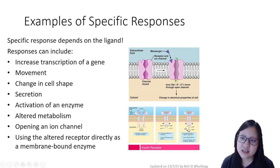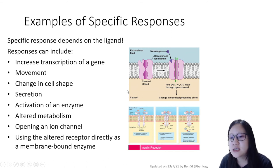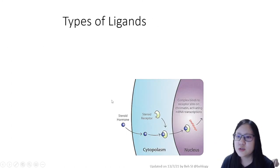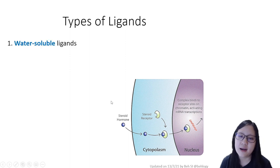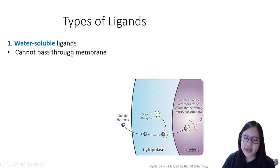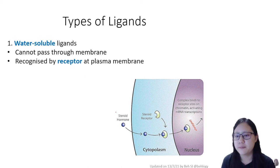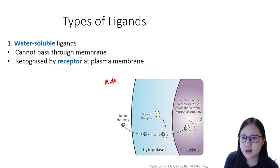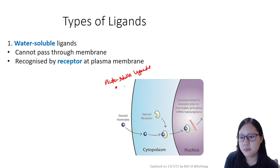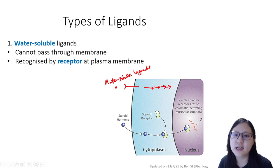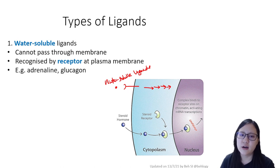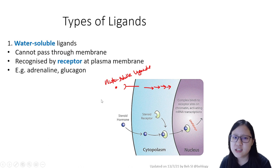Before we end, it's important to note that the process we've covered only applies to water-soluble ligands. Water-soluble ligands like adrenaline cannot pass through the membrane, so their receptor is at the plasma membrane. The receptor at the plasma membrane then results in a cascade of reactions and a specific response. Examples of water-soluble ligands include adrenaline and glucagon.